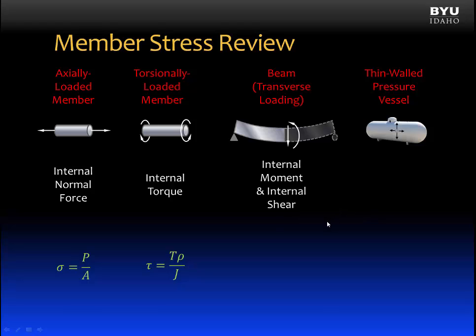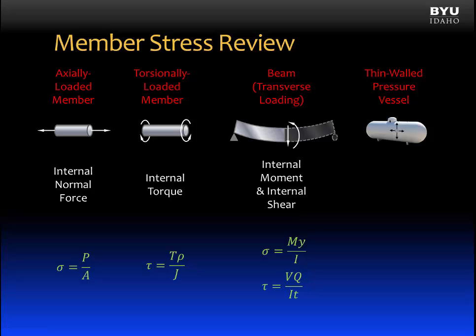For a beam-loaded member, an internal moment results in normal stress, calculated as M times Y — the distance from the neutral axis to the point where stress is being evaluated — divided by the moment of inertia I. Internal shear force in a beam-loaded member results in shear stress equal to V times Q divided by I and by T, the width of the cross-section at the point being evaluated. Q is the area above or below that point times the distance from the neutral axis to the centroid of that area.